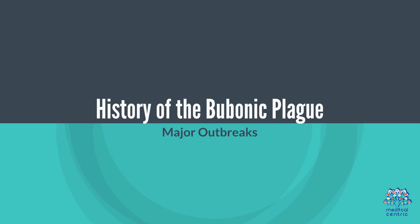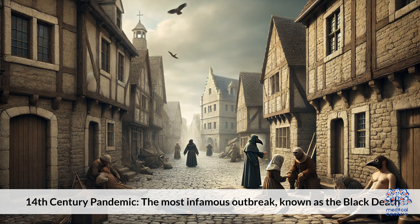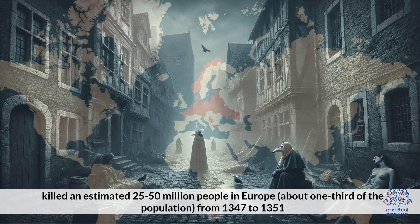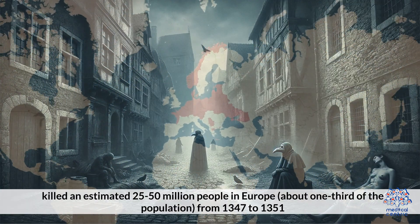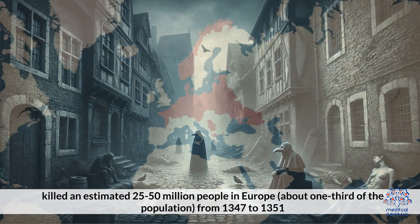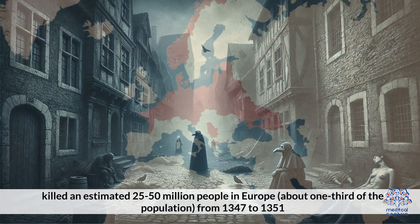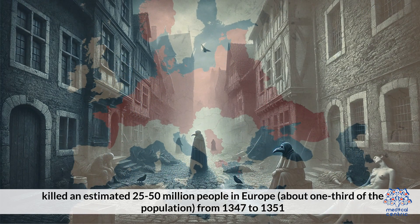History of the Bubonic Plague: Major Outbreaks. 14th Century Pandemic — The most infamous outbreak, known as the Black Death, killed an estimated 25 to 50 million people in Europe, about one-third of the population, from 1347 to 1351.